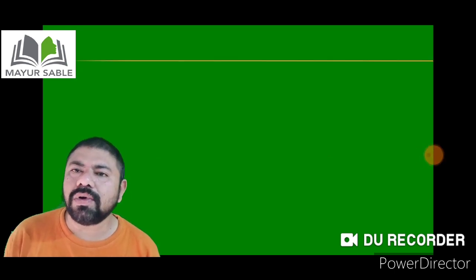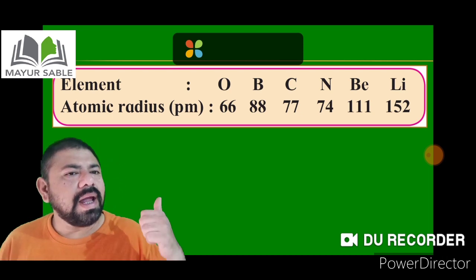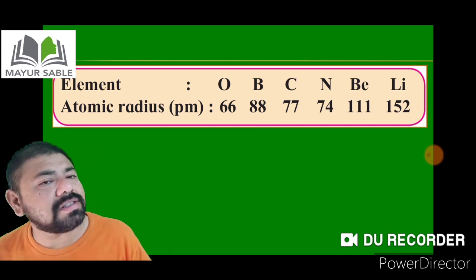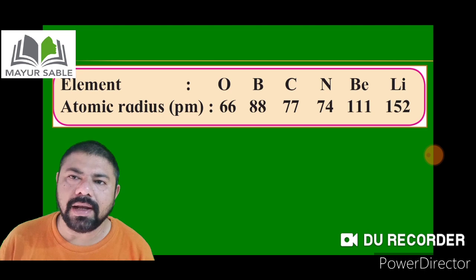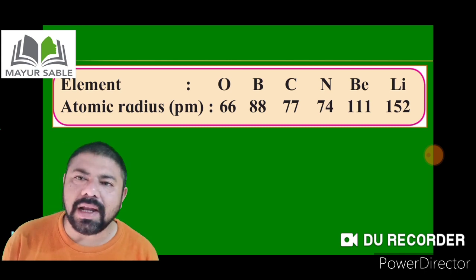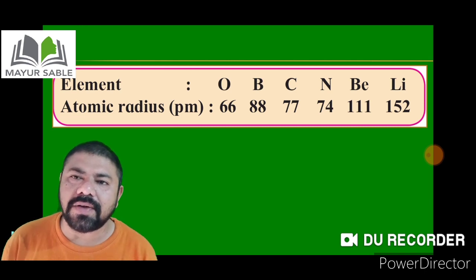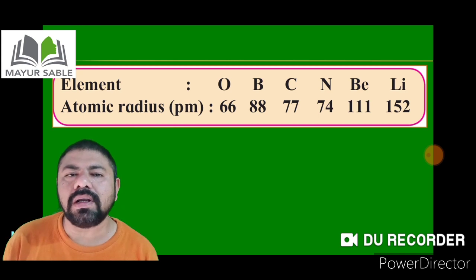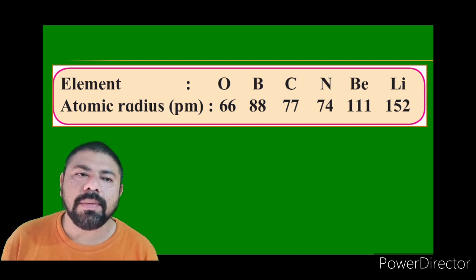To study atomic size as a periodic trend, we will look at an activity from our textbook. Some elements and their atomic radii are given: oxygen (66 pm), boron (88 pm), carbon (77 pm), nitrogen (74 pm), beryllium (111 pm), and lithium (152 pm).